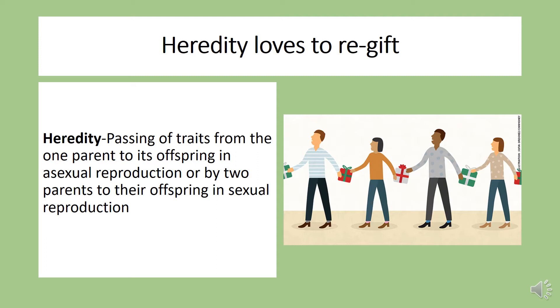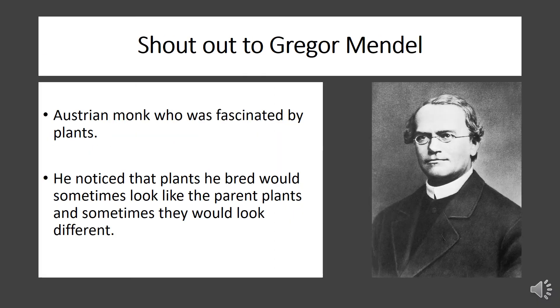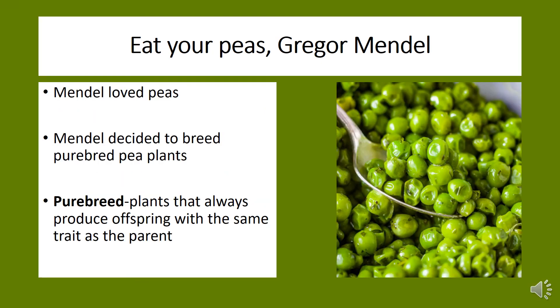Now we come to this man, Mr. Gregor Mendel. He was an Austrian monk who was fascinated by plants. He noticed that the plants he bred would sometimes look like the parent plants and sometimes they'd look different. Now Mendel really loved peas, so one day he decided to breed purebred pea plants. Purebred means plants that always produce offspring with the same trait as the parent.